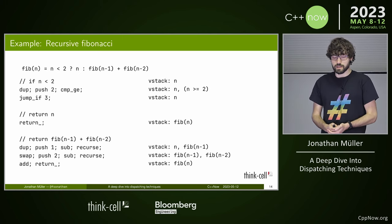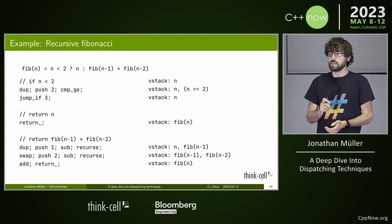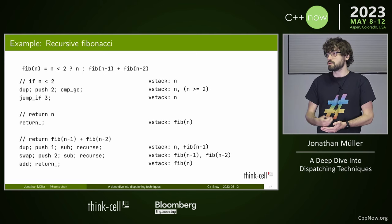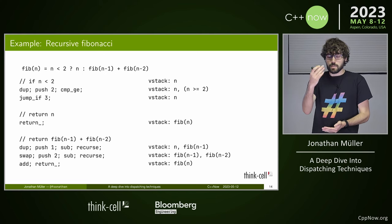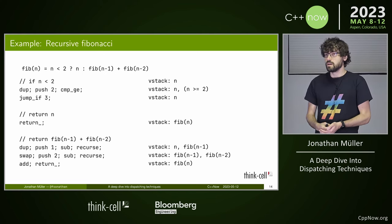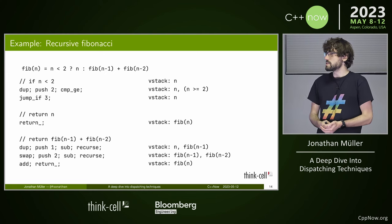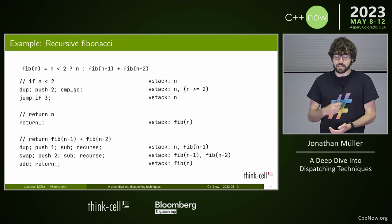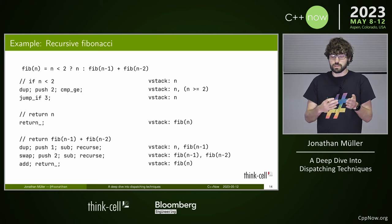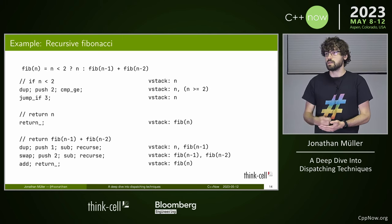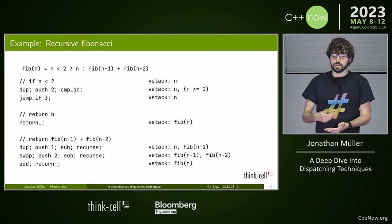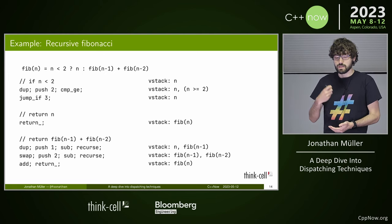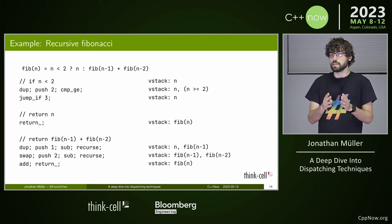We first do the comparison: duplicate n, push 2, and compare against 2. Now we have the result of the comparison on the VStack and do a conditional jump. If n is greater than or equal to 2, we skip down to the duplicate; otherwise we continue with return. Since n is on top of the VStack, that is the correct result. Otherwise, we subtract 1 and recurse to compute Fibonacci(n-1), then swap to put n on top, subtract 2, and recurse again. Finally, we add the two results and return.